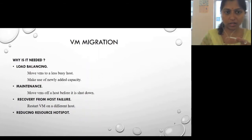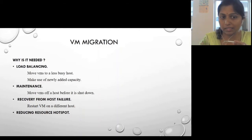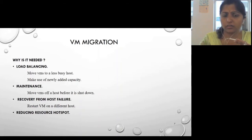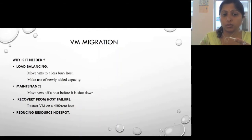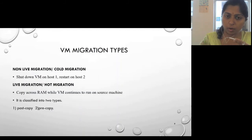Virtual machine migration is required for load balancing, recovery from host failure, and reducing resource hotspots. Load balancing moves VMs to a less busy host. Recovery from host failure allows VMs to be restarted on another host, avoiding VM crashes. Reducing resource hotspots means shifting VMs when there are insufficient resources available on the current server.